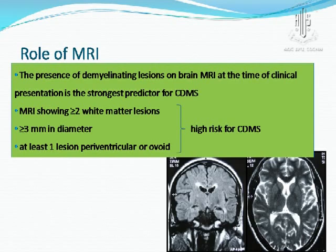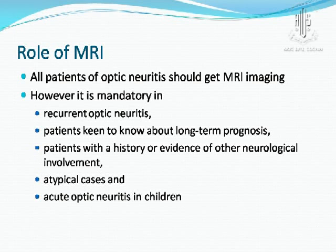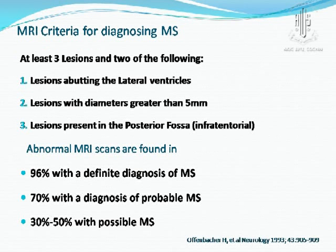If two or more lesions greater than 3 mm in diameter are seen on MRI, with at least one being periventricular or ovoid, there is a high risk of clinically definite MS (CDMS). All patients with optic neuritis should have an MRI at the outset; it is mandatory in recurrent optic neuritis, in those wanting long-term prognosis, in cases with neurological involvement, and in atypical cases. At least three lesions abutting the lateral ventricles or lesions greater than 5 mm are diagnostic of MS. Abnormal MRI scans are found in about 96% of definite MS, 70% of probable MS, and 30–50% of possible MS cases.